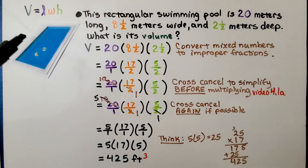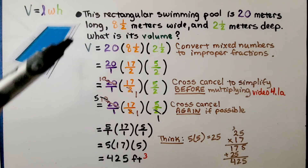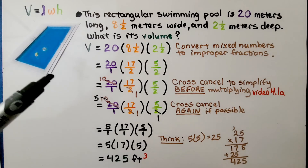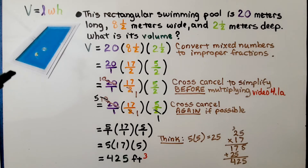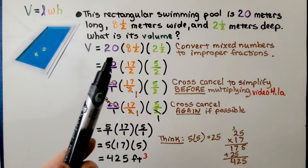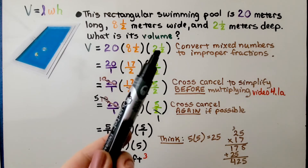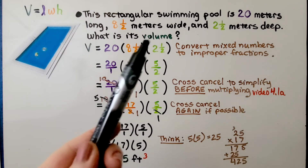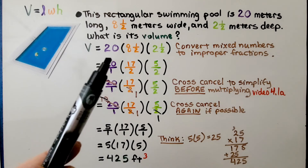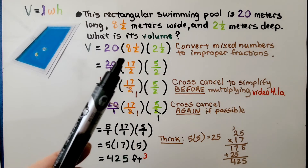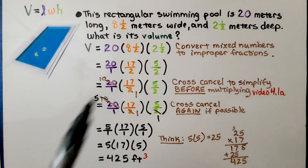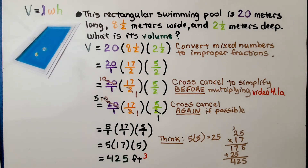Now let's use the length times width times height. This rectangular swimming pool is 20 meters long, 8.5 meters wide, and 2.5 meters deep. What is its volume? That means we have 20 times 8.5 times 2.5. We need to convert these to improper fractions: we have 20 over 1 times 17 halves times 5 halves. Now we cross-cancel to simplify before multiplying — this will make our life easy.